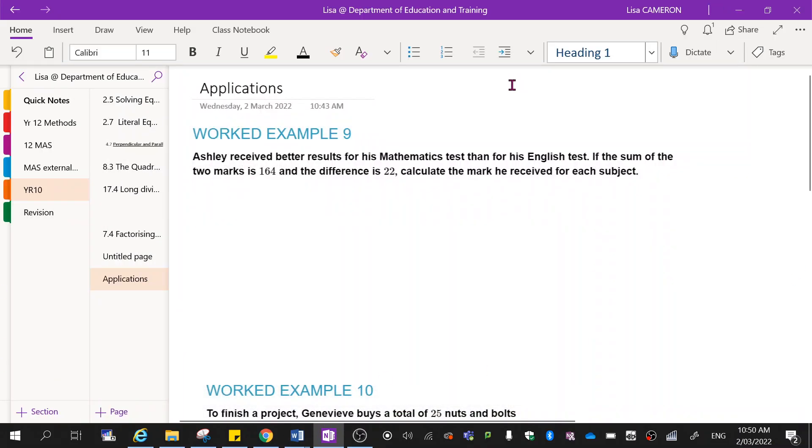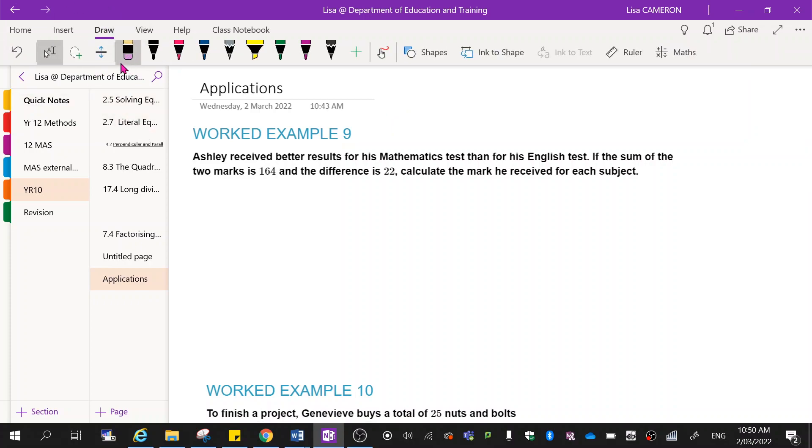So work example nine. Ashley receives better results for mathematics tests than she does for her English tests. Well that's just because maths is a better subject. If the sum of the two marks is 164 and the difference is 22, calculate the mark received for each subject.